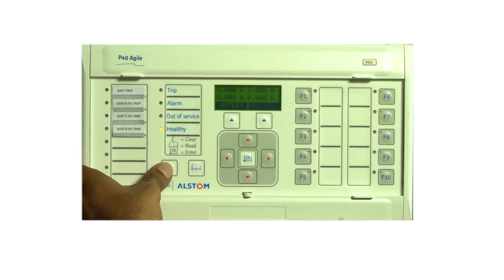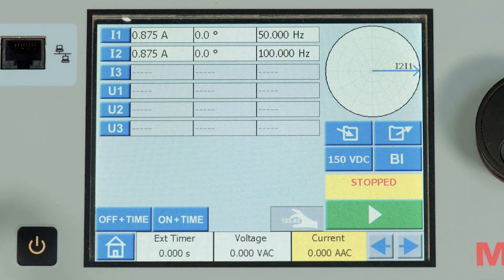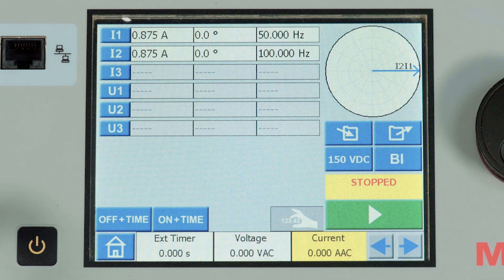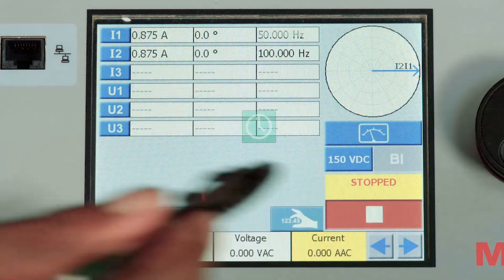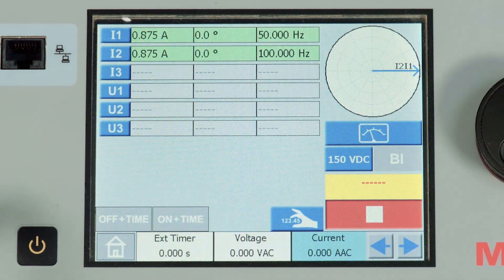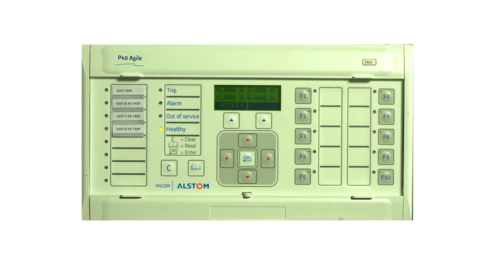Let me reset the relay. Now, let us decrease the magnitude in the LV and monitor the tripping of the relay. By injecting this current, we can see that the relay has not picked up.